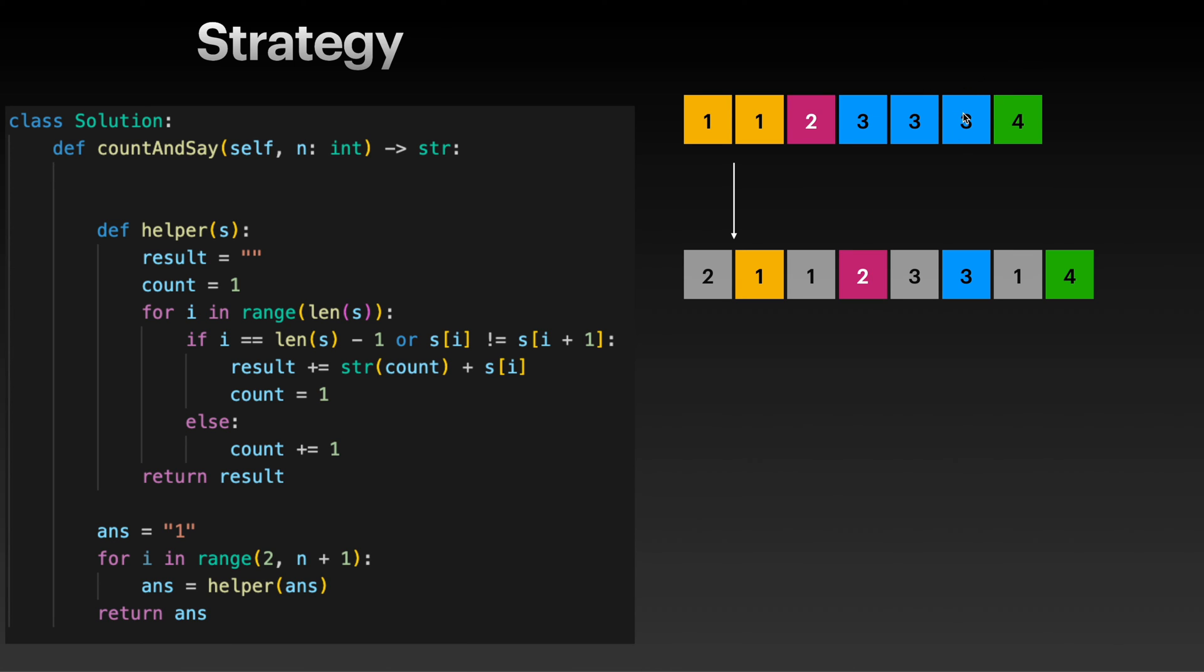So we are in this if statement and result will be - our count is here 3, so we turn it into a string, and then s[i] in this case is 3, so we have "33". And so here is our "33" here.